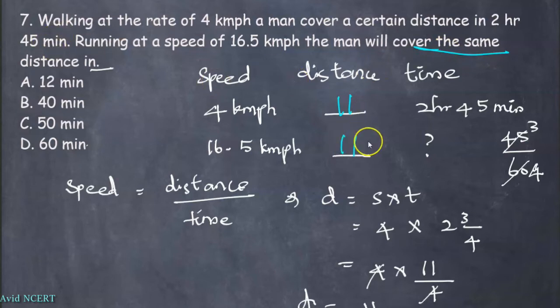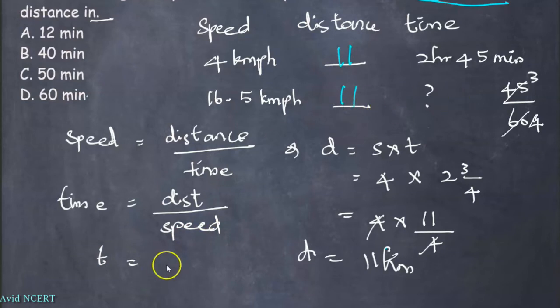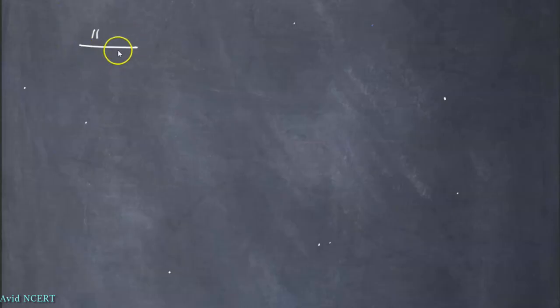Now we have found that distance is 11, so it is also the same distance covered. They have mentioned cover the same distance, so the distance is same, 11 kilometers here. Now we have to find the time from the second given data, which is speed and distance. From the formula we know the time equals distance by speed. Substituting the values: t equals distance value is 11 divided by speed is 16.5.